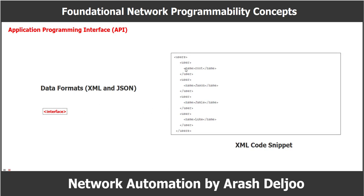The end tag must be the same as the string of the start tag, preceded by a slash. Inside the start tag and end tag, you can use different code and parameters. This example shows a snippet of XML output with both start and end tags and some configuration parameters. The data is structured so that it contains a section called 'users,' and within that section are four individual users: root, JSON, Jamie, and Luke. Each username is surrounded by start and end tags, and before and after each username are the start tag 'user' and end tag '/user'.